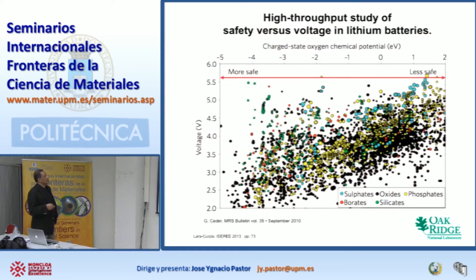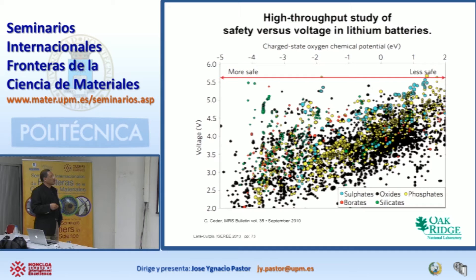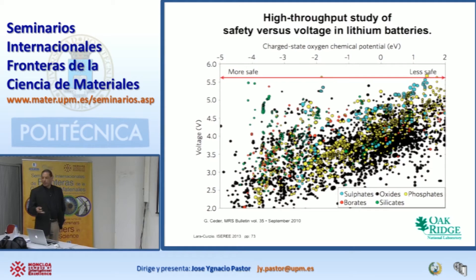Here we have a chart showing the electrochemical potential for many different batteries. If you are in this range, you have less safety — these chemistries are prone to ignite. If you move in this direction, they are more safe. This is data from first principles calculations — you do the quantum mechanics calculations and you can predict the voltages and electrochemical potentials in your battery. You can then select whether sulfates, oxides, phosphates, borates, or silicates are the chemistries that will give you the safety to prevent an explosion.